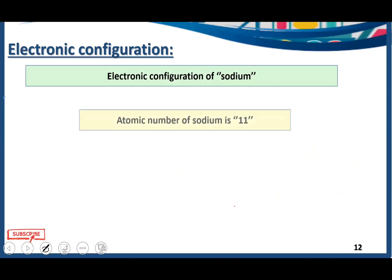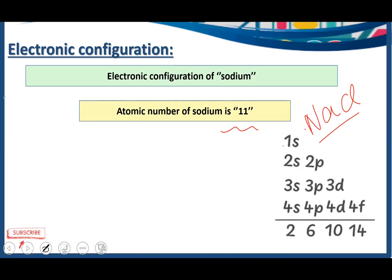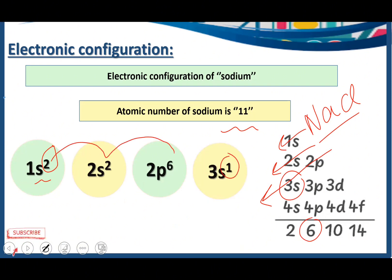Electronic configuration of sodium — the sodium that is part of our common salt NaCl. Atomic number of sodium is 11. We write 1s2 (s subshell holds 2 electrons), 2s2, 2p6 (p subshell holds 6 electrons). Now we take another energy level, 3s, and accommodate one more electron: 3s1. Counting: 2+2=4, 4+6=10, 10+1=11. The electronic configuration of sodium is 1s2, 2s2, 2p6, 3s1.